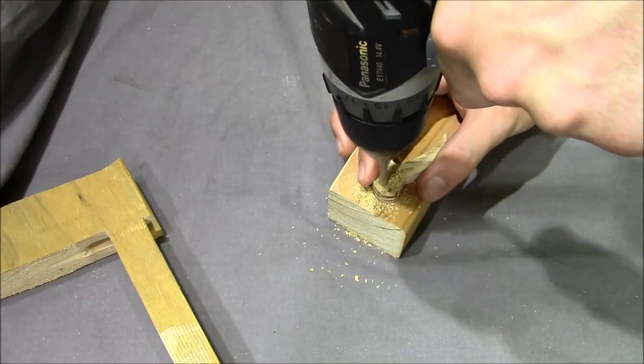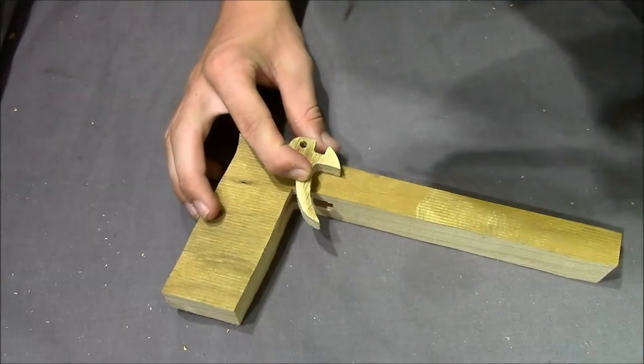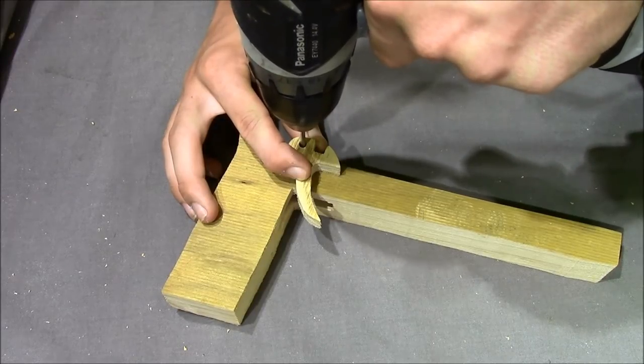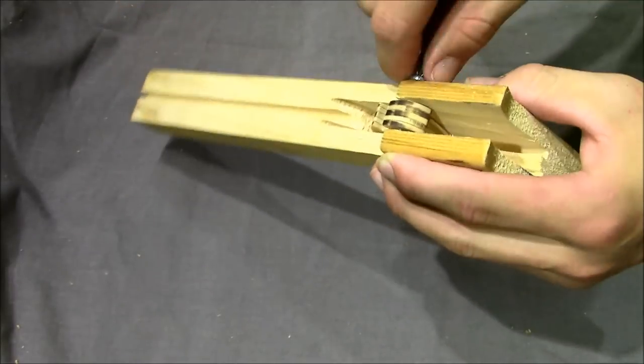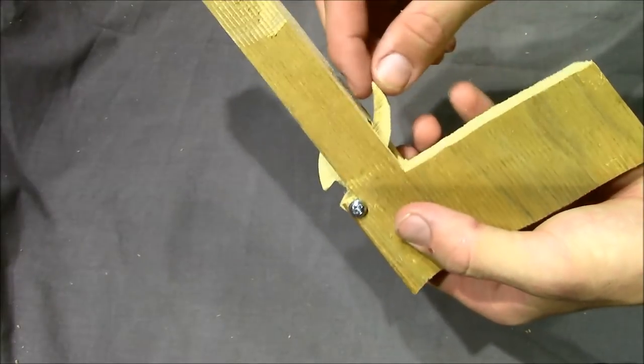You're now just going to need to drill a small hole in the back of your trigger. Now I'm just positioning my trigger where I want it to be and I'm simply drilling a hole through the body of the crossbow. Simply insert a bolt through the body and the trigger mechanism of the crossbow and as you can see it easily pivots.